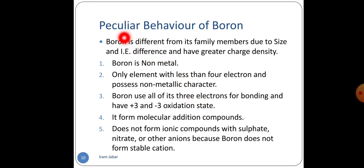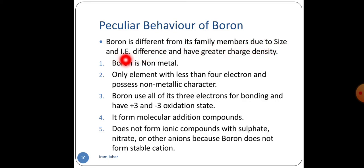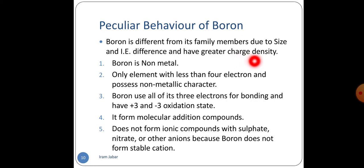Now we will come to the next part of our topic: the peculiar behavior of boron. We know that every first member of a group is different from its family members because first members have a smaller size, and due to smaller size, their ionization energy is higher than the rest of their members. The first member also has greater charge density because it has a smaller size while its charge is comparatively greater.